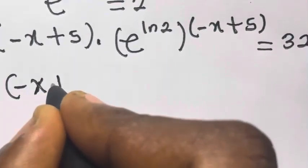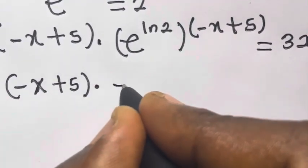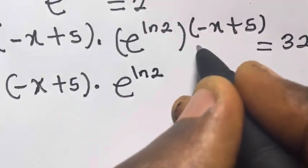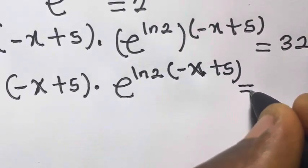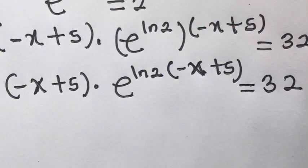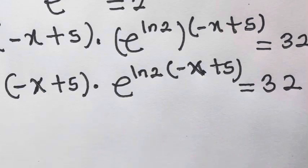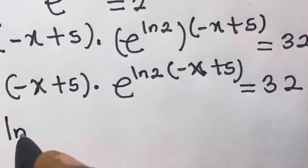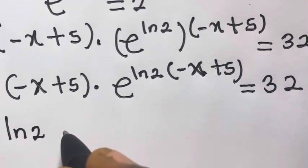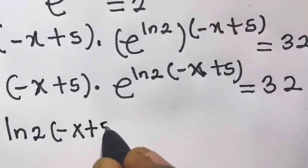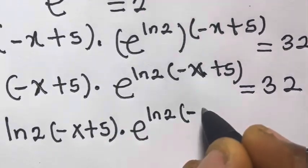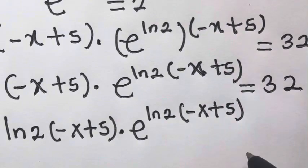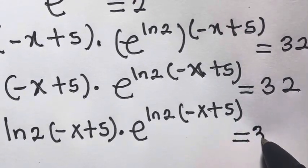So we can multiply this together: minus x plus 5 times exponential of ln(2) times minus x plus 5, and this equals 32. From here we multiply both sides by the natural log of 2, so we have ln(2) times minus x plus 5 times exponential of ln(2) times minus x plus 5 equals 32 times ln(2).